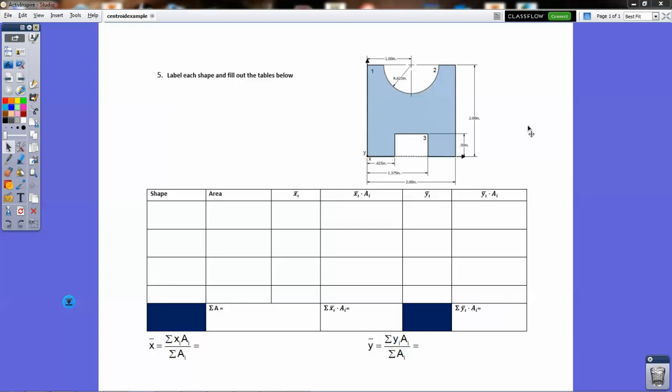And I want to use this organizational chart to kind of walk you through all of the steps involved with finding the centroid of this particular object. So here we have an object, and it's basically a square overall shape, and then there are two cutouts.